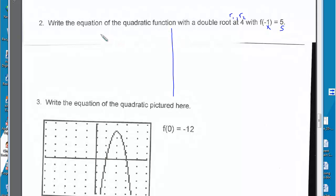So let's set up two columns. y equals a times x minus root 1 times x minus root 2. On the right side, y equals a times x minus 4 times x minus 4.